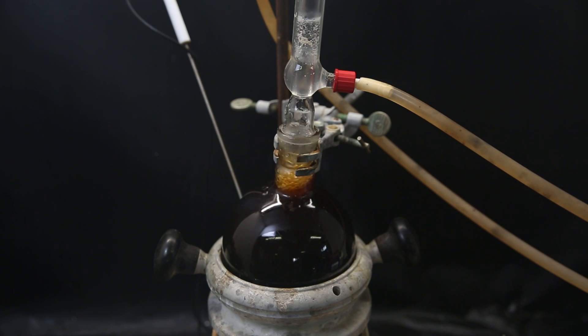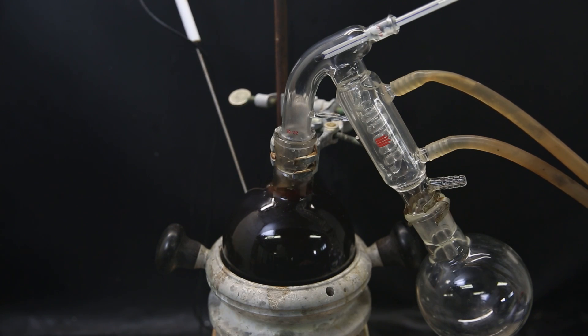When I return, the mixture has become a dark red, and I replace the condenser with a short path distillation apparatus. First, I distill off part of the solvent under atmospheric pressure because it's quite full.